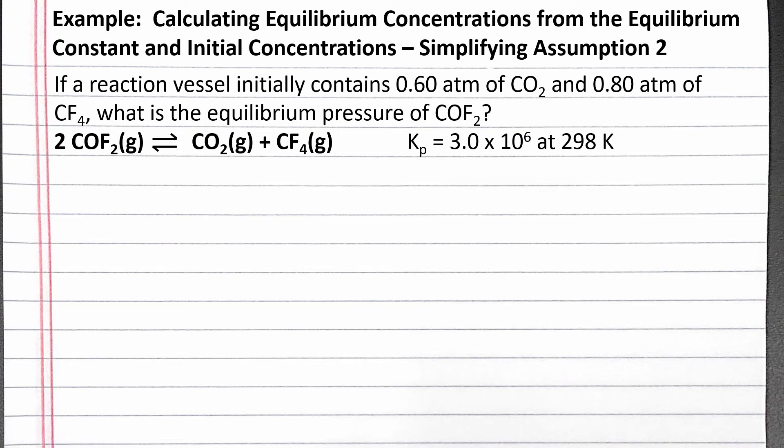In this example, we calculate equilibrium concentrations from the equilibrium constant and initial concentrations, solving for x using two simplifying assumptions. Our problem reads, if a reaction vessel initially contains 0.60 atmospheres of carbon dioxide and 0.80 atmospheres of carbon tetrafluoride, what is the equilibrium pressure of carbonyl difluoride?